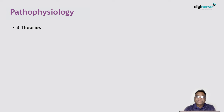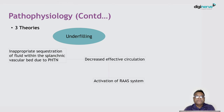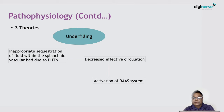Three theories have been described in relation to the pathogenesis of ascites: the underfilling theory, the overfilling theory, and peripheral arterial vasodilatation. In the underfilling theory, there is inappropriate sequestration of fluid within the splanchnic vascular bed due to portal hypertension. Portal hypertension leads to splanchnic vasodilatation and inappropriate retention of fluid in the splanchnic basis, reducing effective arterial and renal circulation. This activates the RAAS system, causing more retention of sodium and water, which accumulates in the peritoneal cavity.